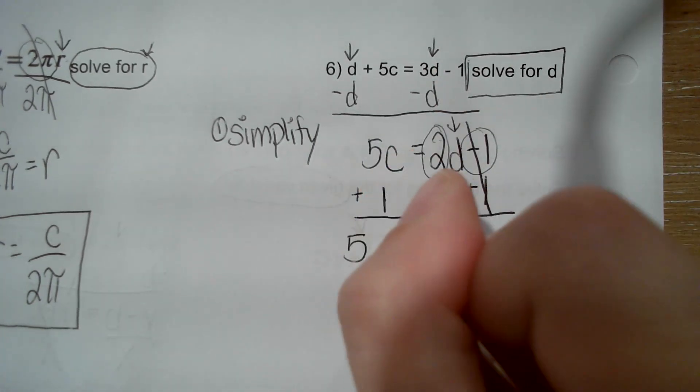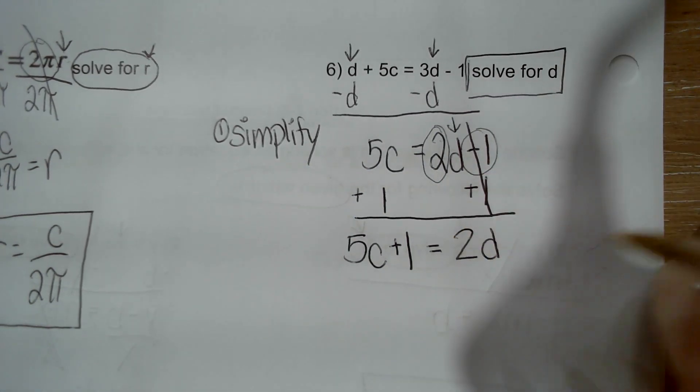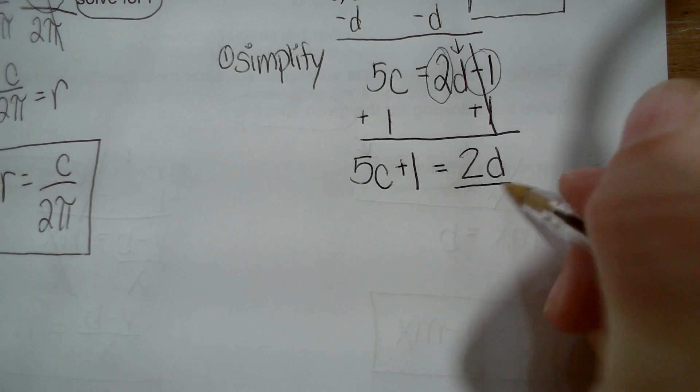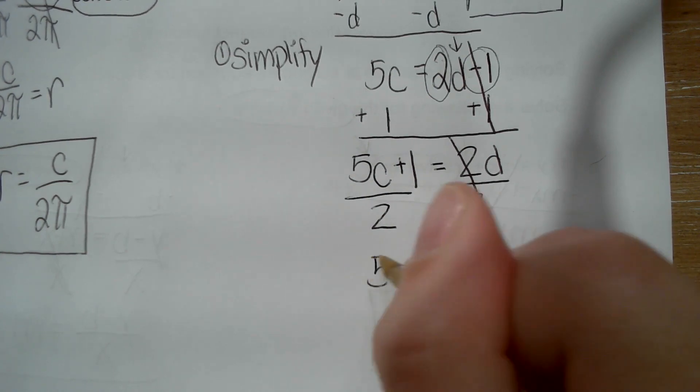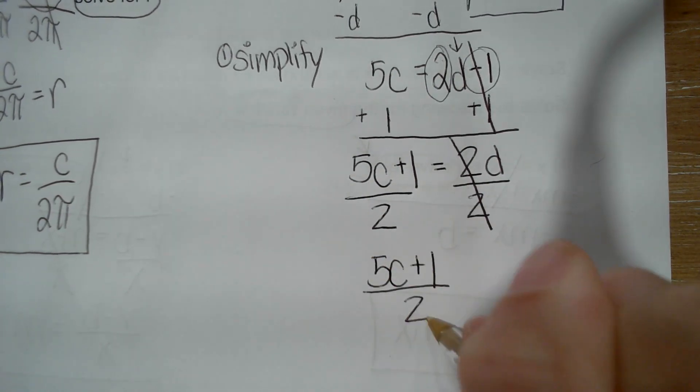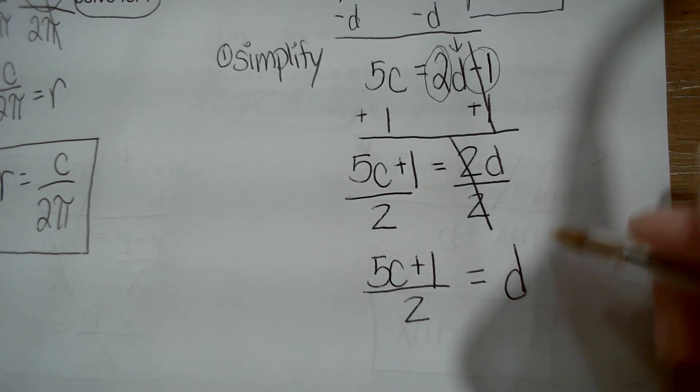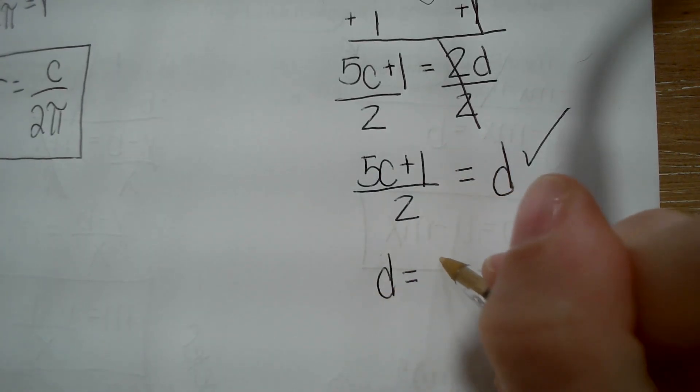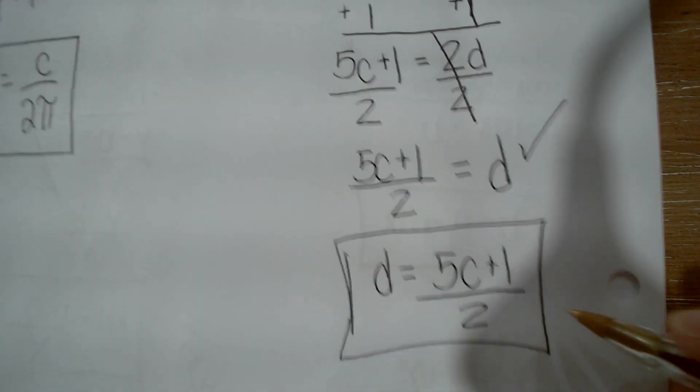That gives me 5C plus 1 equals 2D. Now I'm closer, but I still need to get the D alone. So to do that I'm going to divide by 2, and that gives me 5C plus 1 over 2 equals D. So now I've isolated my variable D, and I can rewrite my final answer. And I am good to go.